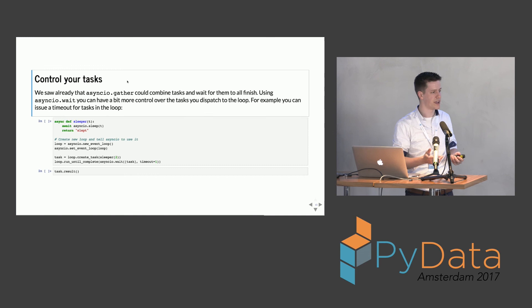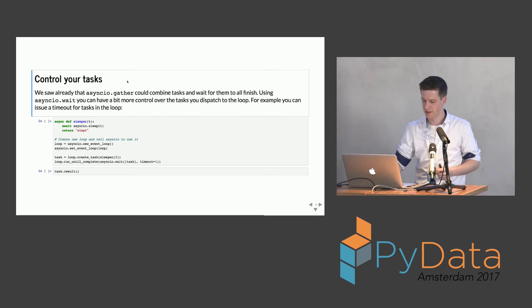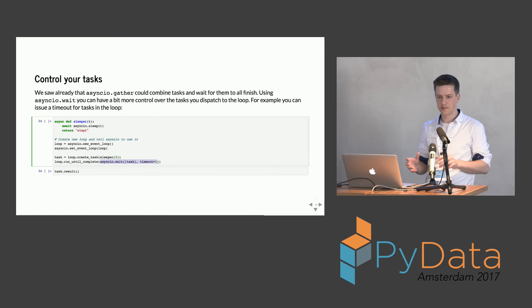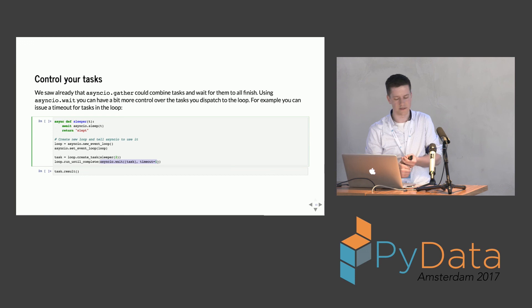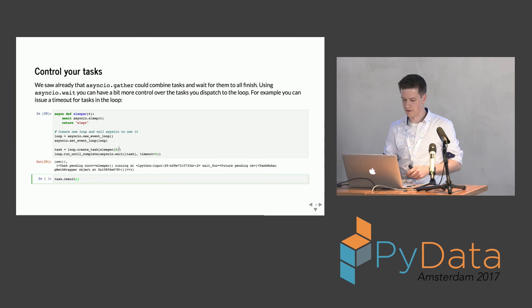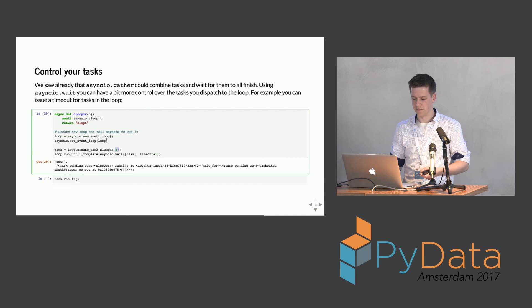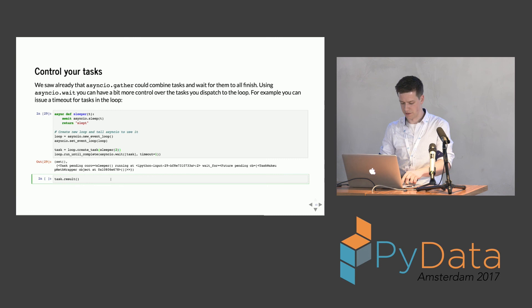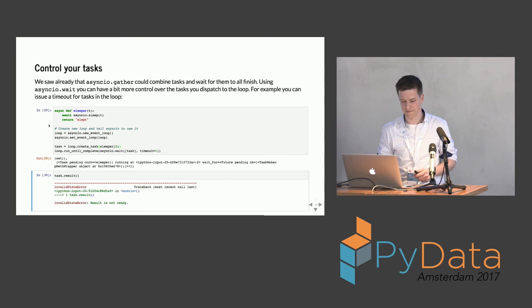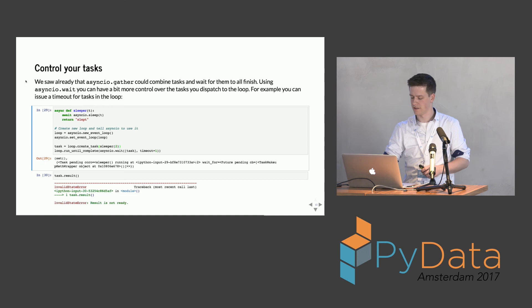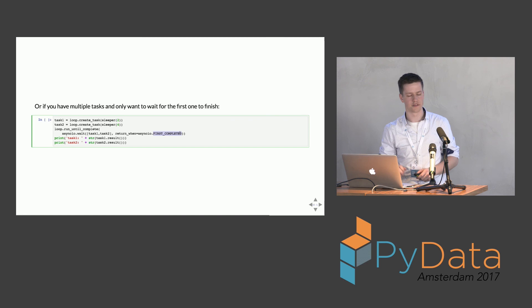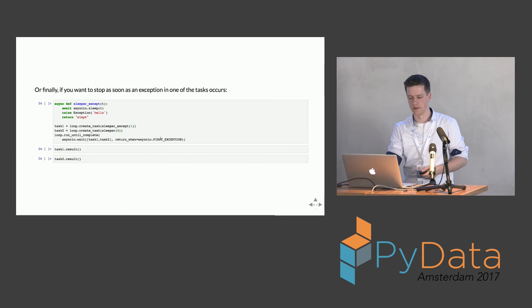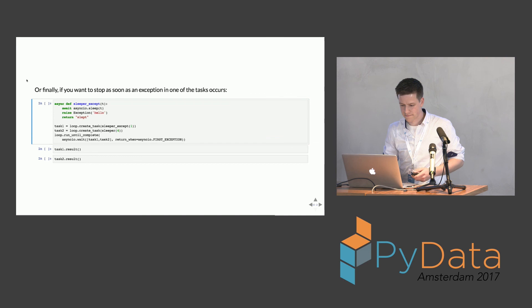For controlling tasks, we saw asyncio.gather, which combines two tasks into one awaitable. There's also asyncio.wait, which gives more functionality — for instance, you can specify a timeout. If a task times out, asyncio will inform you there's still a task running in your loop. You can also wait until the first task completes, or stop when an exception occurs.